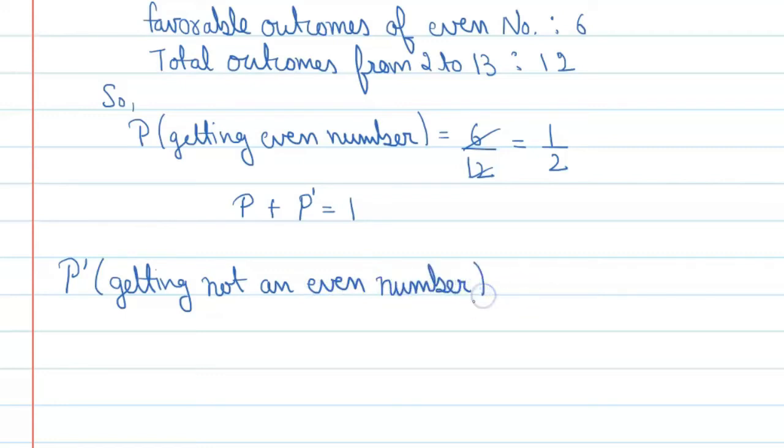What will it equal? This will be equal to 1 minus P, from this relation. So we'll put the value here and see. We can say it is 1 minus 1 upon 2, because P value is 1 upon 2. If we solve this further, we get 1 upon 2 again.